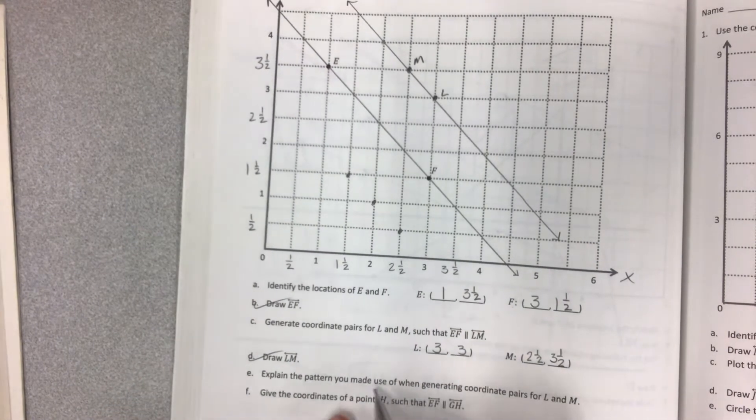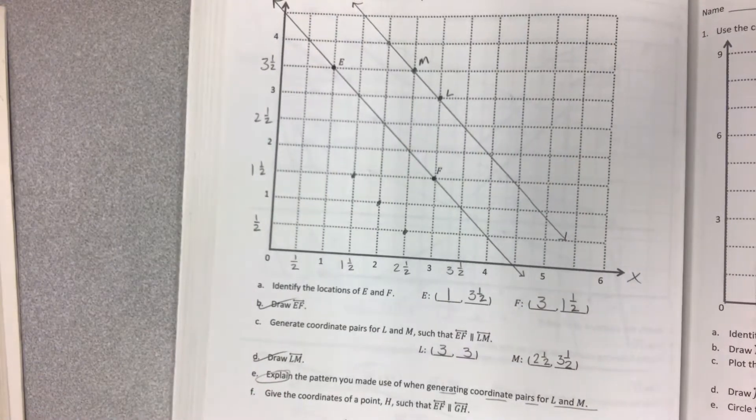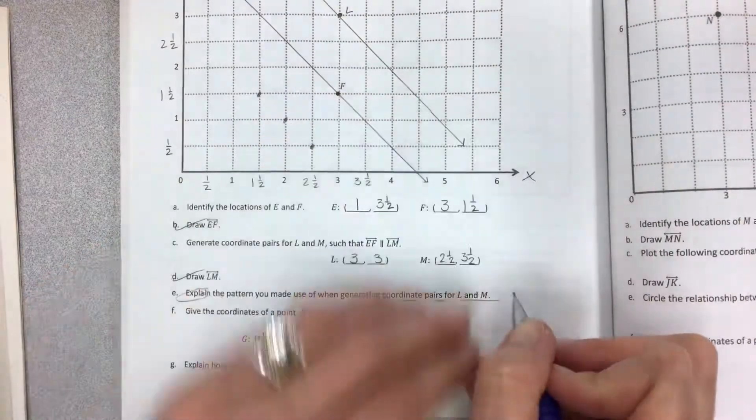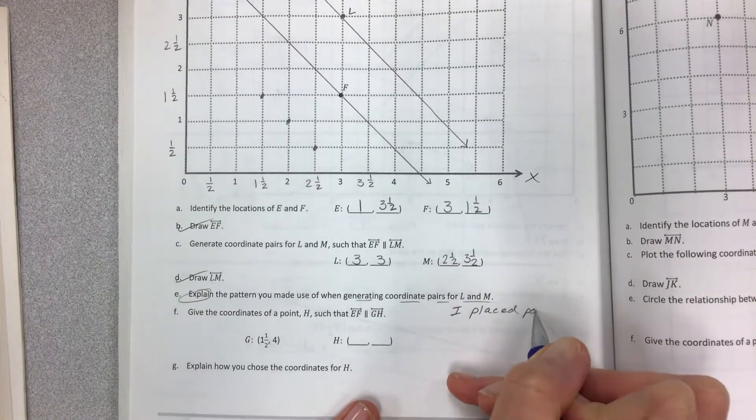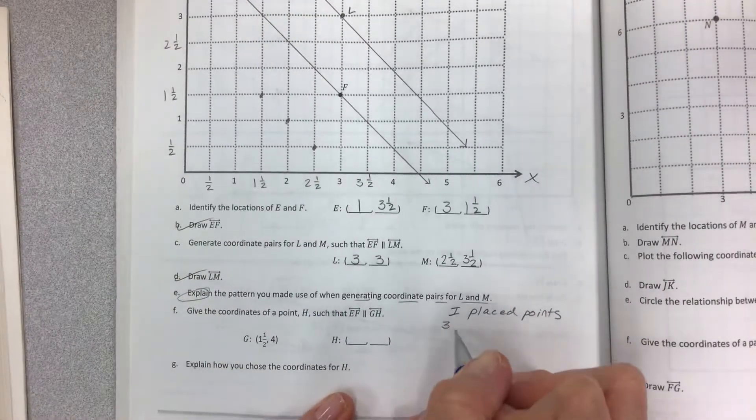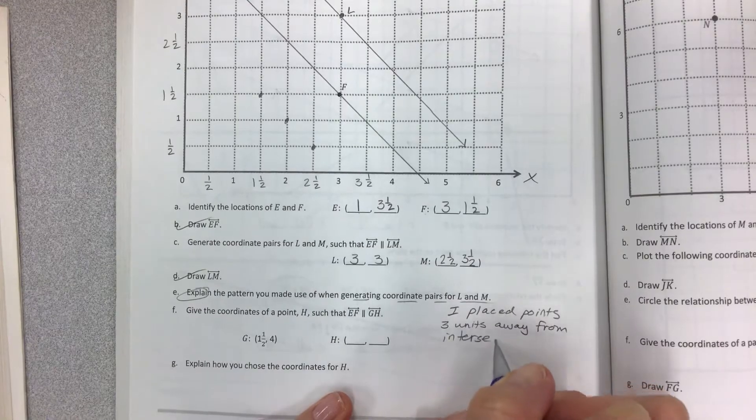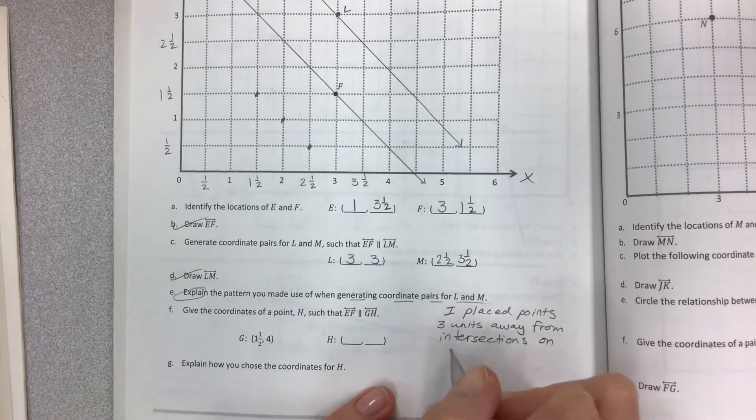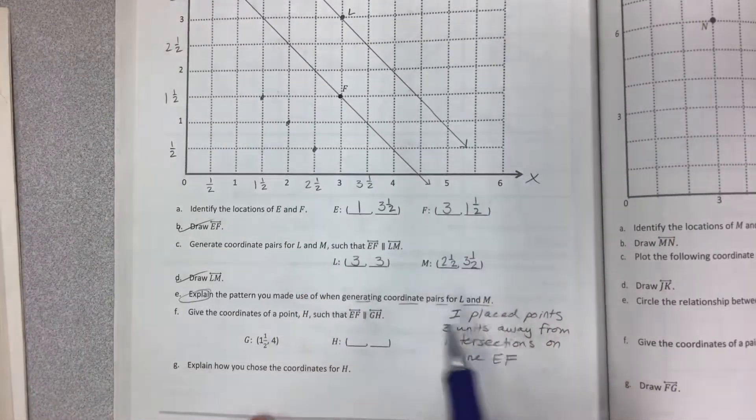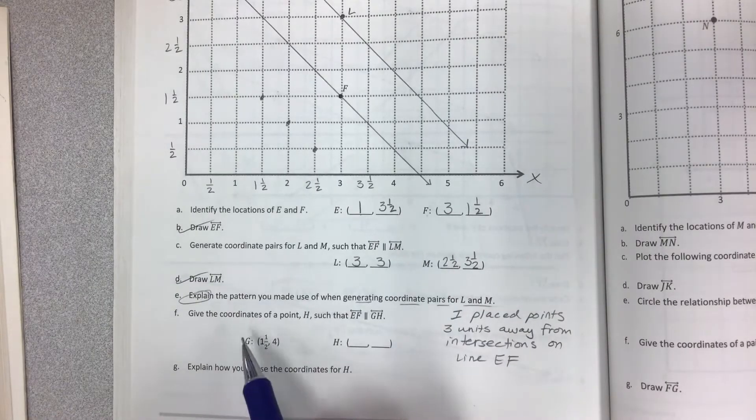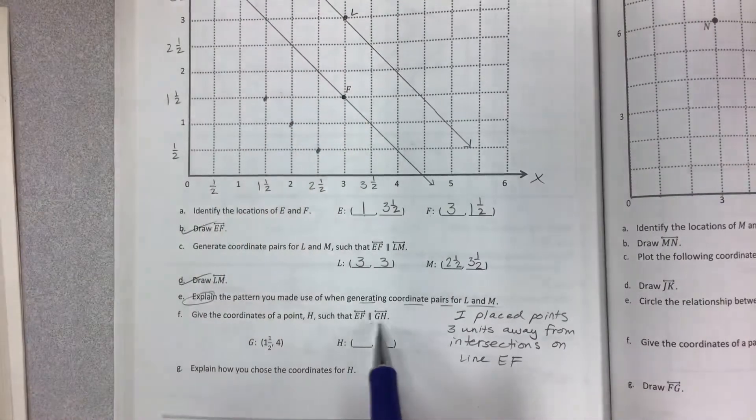So now I have line LM that is parallel to line EF. Now explain the pattern you made use of when generating coordinate pairs for L and M. So you have to explain and they give you literally no room. So off on the side here I want you to write what you did. Okay out in this space out here. I placed points however many units—I placed points 3 units away from intersections on line—here's the important part—EF. So you're using line EF to move away from line EF so that you can plot new points that create points L and M.